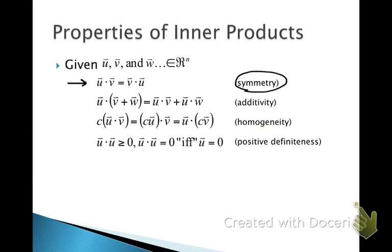Then we have two properties that look almost like a distributive type of property. Here we have two vectors that are added together, and we take the inner product of the sum of those vectors with u — it's the same as taking the inner product of u with one vector and adding that to the inner product of u with the other vector. We also have a scalar quantity c, and c times the inner product of u with v equals the inner product of (cu) with v, or the inner product of u with (cv). That's called homogeneity.